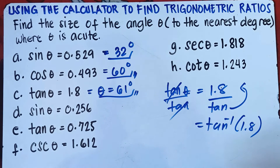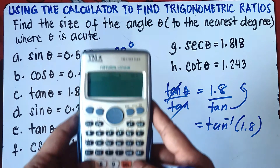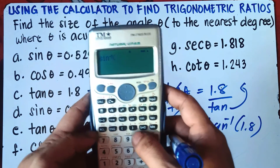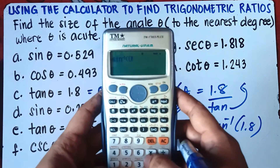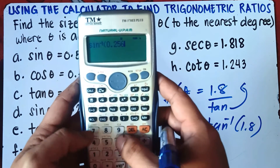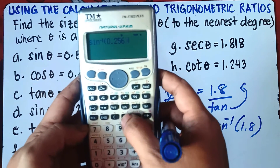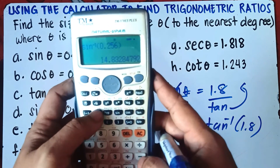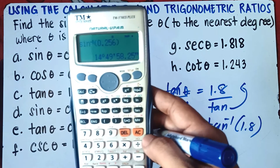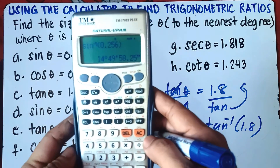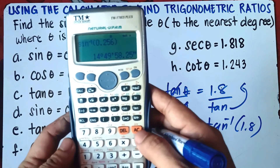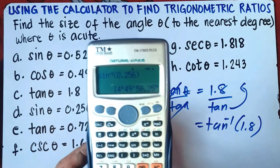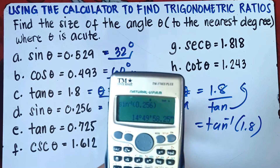Letter D: sine theta equals 0.256. Press shift sine, enter 0.256, close parenthesis, equal sign, press the degree symbol. This gives 14 degrees, 49 minutes. Since 49 minutes is greater than 30, we round up — the answer is 15 degrees.